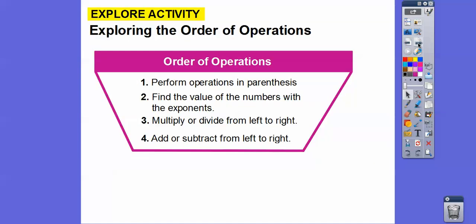So here's the order of operations. We follow this order right here. If there are any parentheses, we do the parentheses first to simplify the stuff inside. Then once we're done with that, we look for any exponents and we do those next. Then we multiply or divide from left to right — it depends on which comes first going left to right. Same with add or subtract — it could be subtract or add, from left to right.